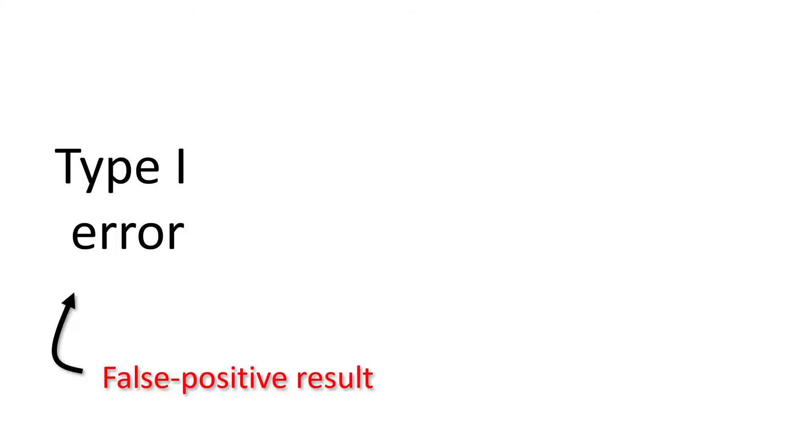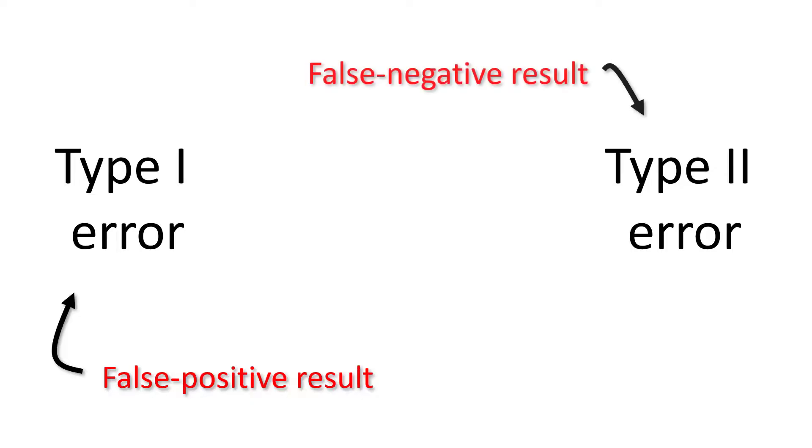On the other hand, there is also type 2 error. This occurs when you fail to reject a false null hypothesis. In other words, this is a false negative result.